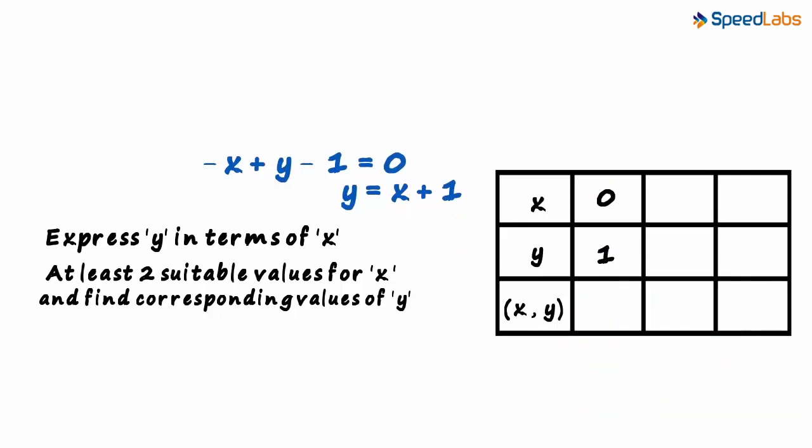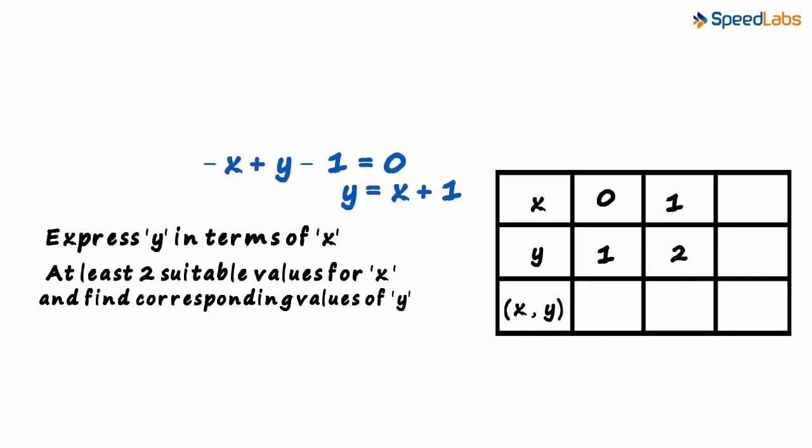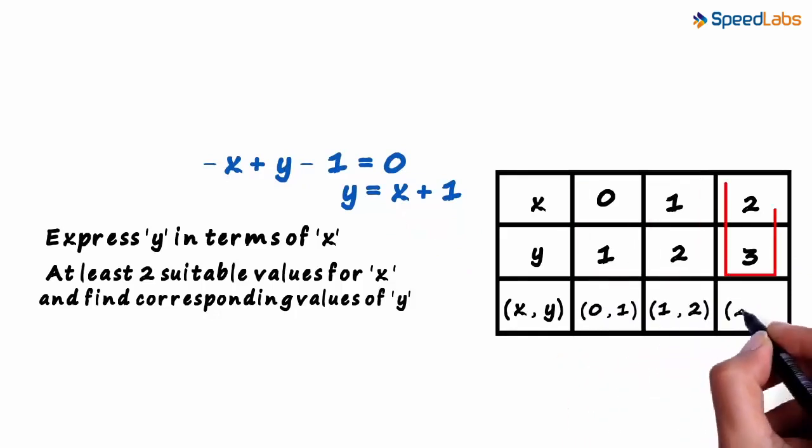Now let's assume x to be one. If we put x equals one, then we will get the value of y as one plus one which equals two. And if we use two, then we get the value of y as three. That's it. Now we have three points on our graph: zero comma one, one comma two, and two comma three.